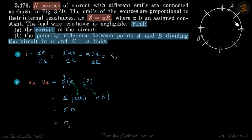We need to find the current in the circuit and then potential difference between any two points A and B that are dividing the circuit in n and n-n links.